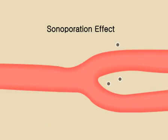As a result of this sonoporation effect, the transfection efficiency into and across the endothelial cells is increased, and transgene-encoding vectors can be deposited into the surrounding tissue of interest. Plasmid DNA remaining in the circulation is rapidly degraded by nucleases in the blood.